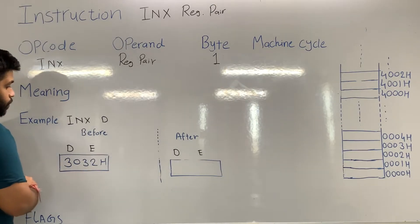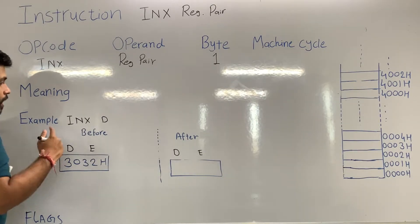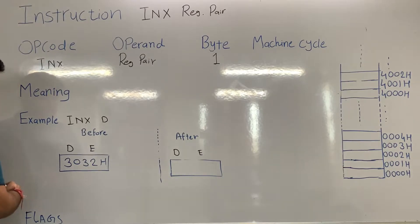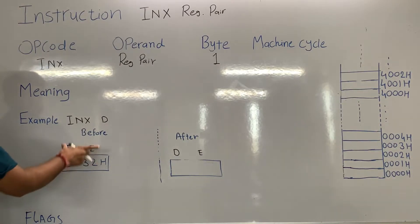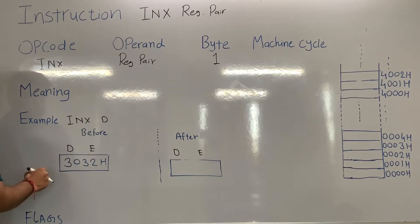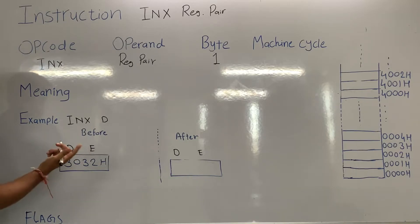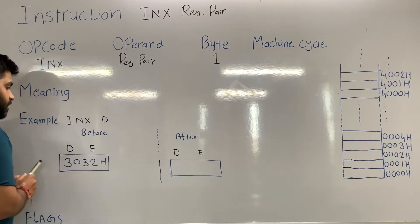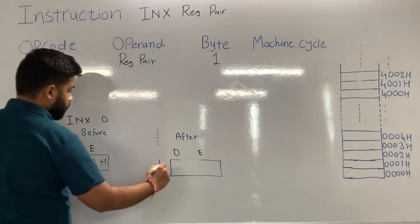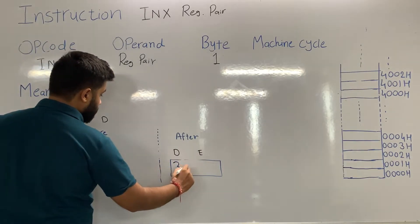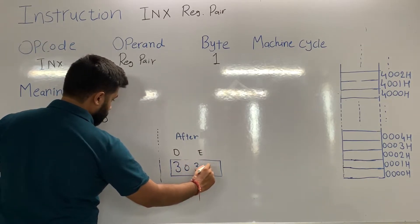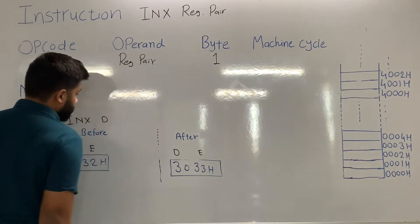Before the execution, the content of the DE pair is 3032H. After the execution, the content of the DE pair will be incremented and the answer will be stored in the same register pair, so in the DE pair you will get 3033H.